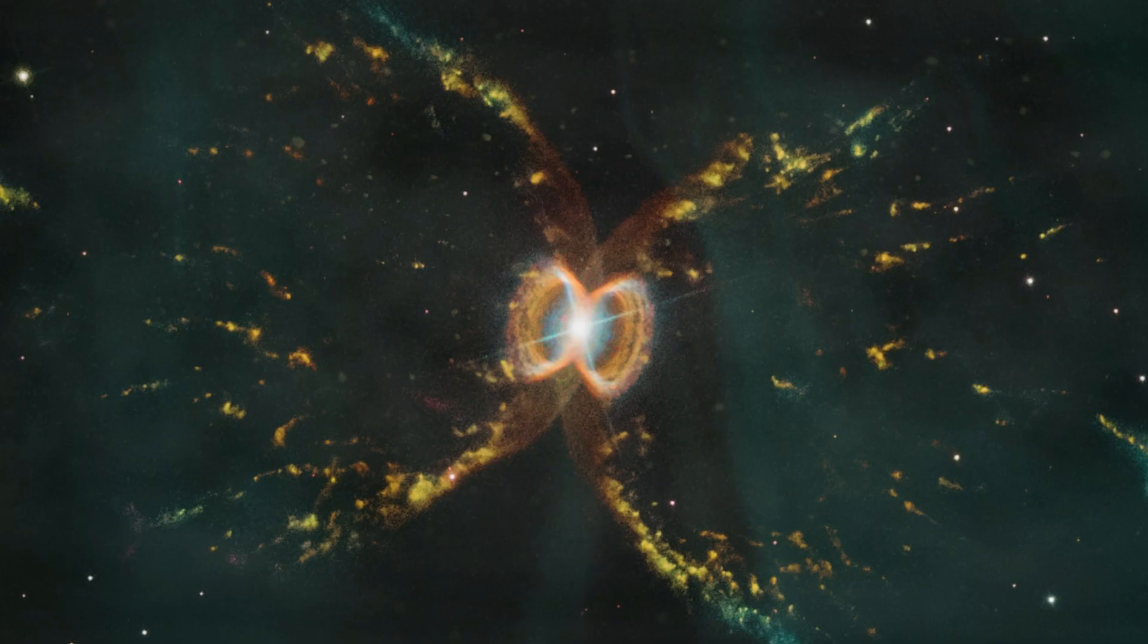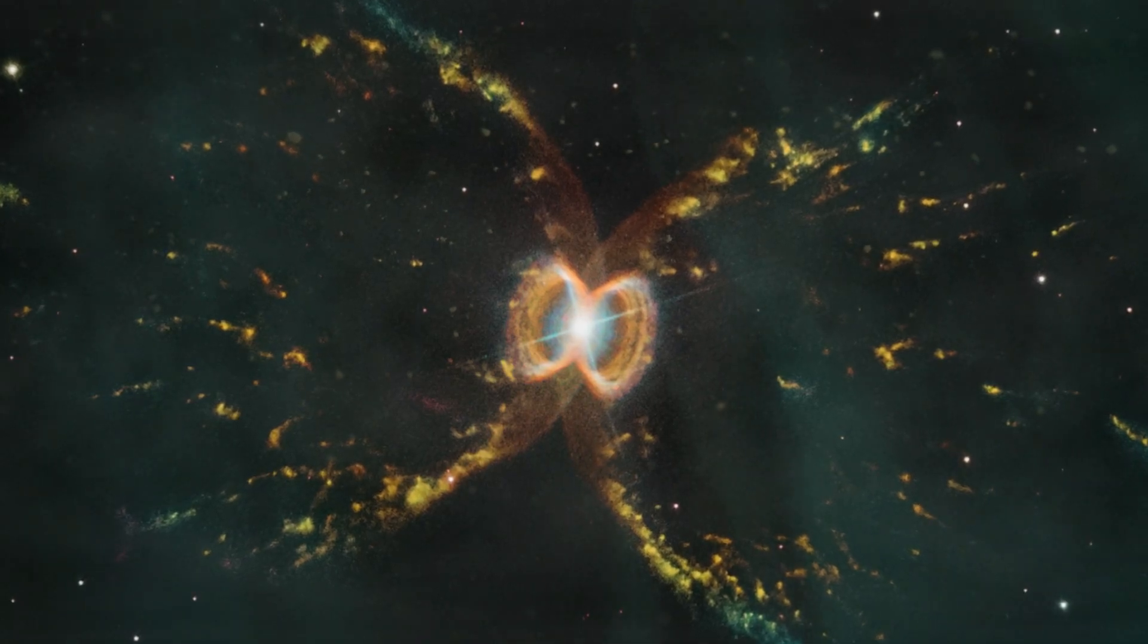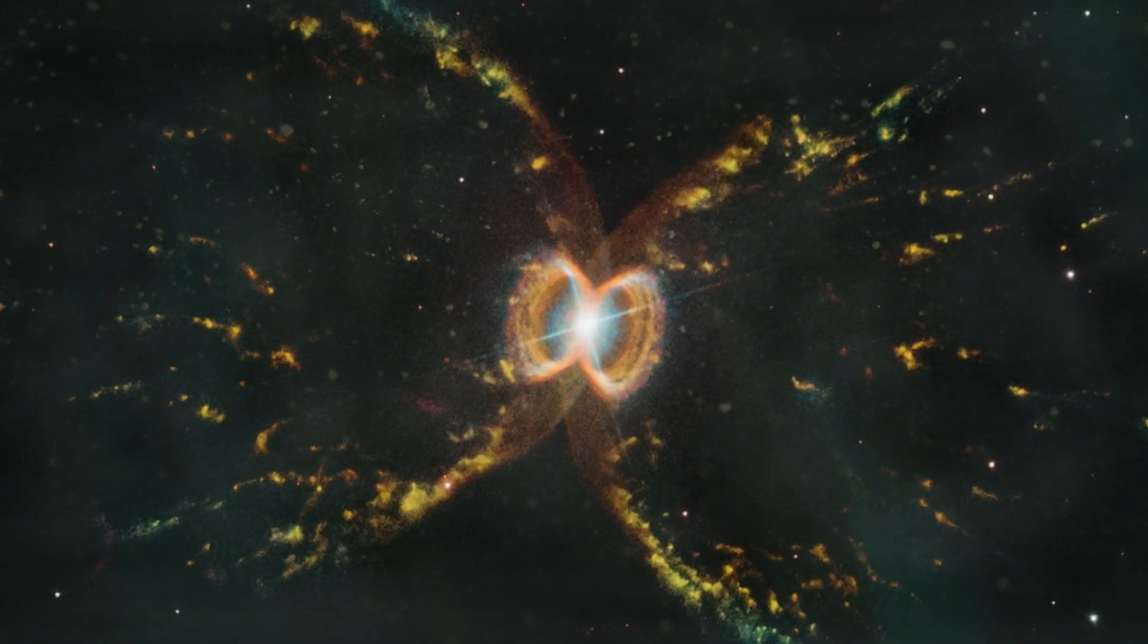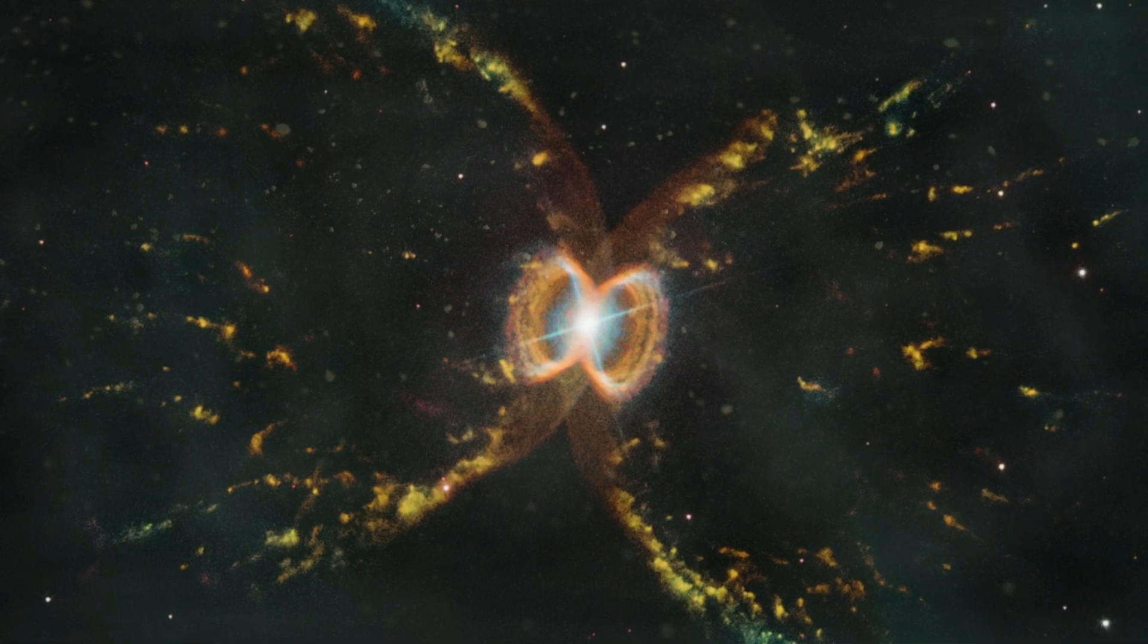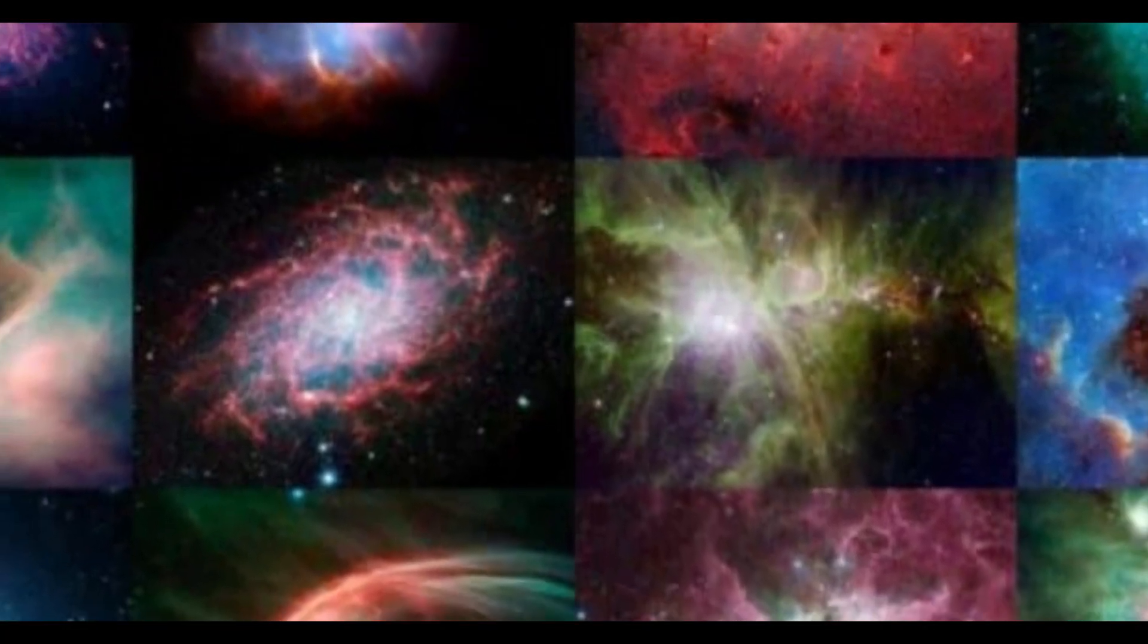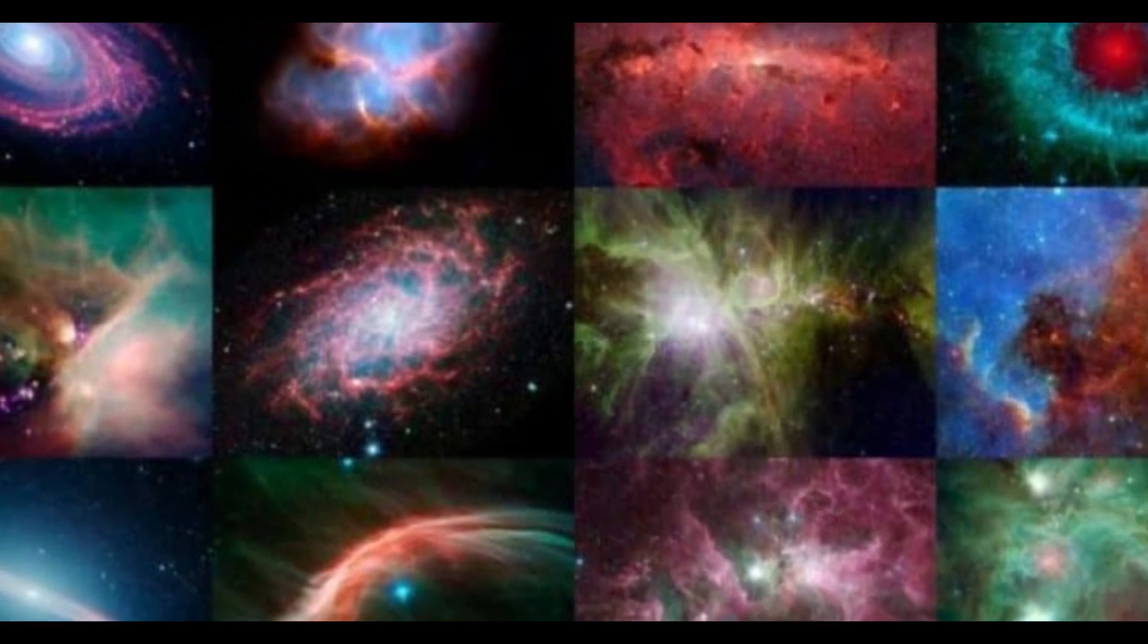Galaxies come in various shapes and sizes, from elliptical to spiral to irregular, and they are the cosmic laboratories where stars are born, evolve, and eventually die. They are the cities of stars in the universe, each with its own unique history and composition.